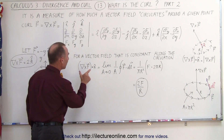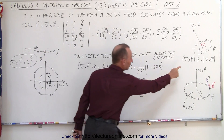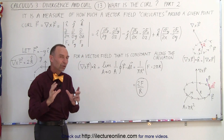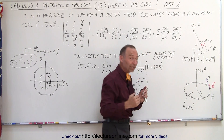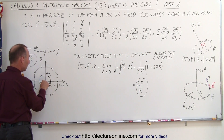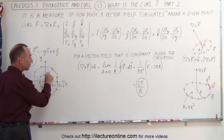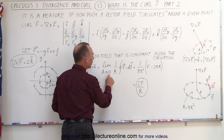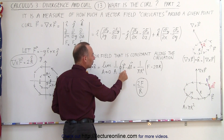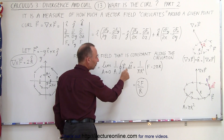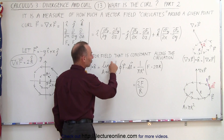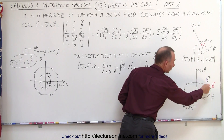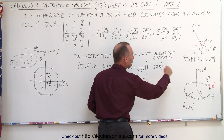We define the magnitude of the curl as the limit as the area approaches zero: one divided by the area times the line integral of the vector field dotted with dl, integrated all the way around. This becomes 1 over pi r squared — as r goes to zero — times the magnitude of the vector field, which is constant along that path, times the distance traveled, 2 pi r.